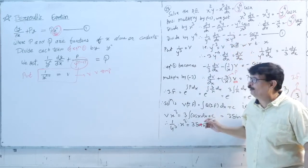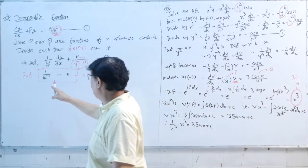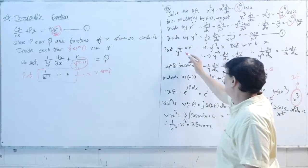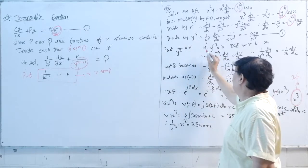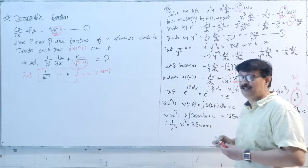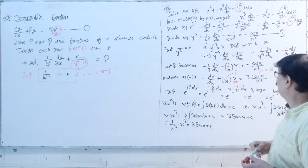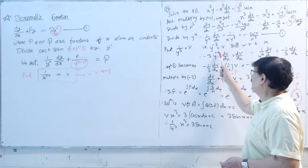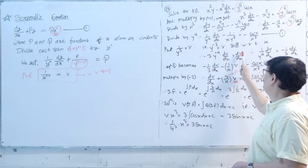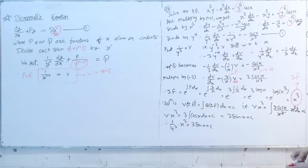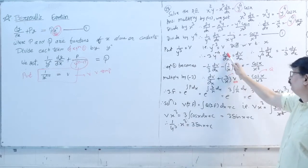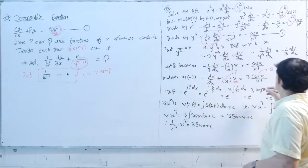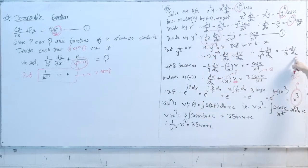As per the rule, put 1/y³ = v, i.e., 1/y^(n-1) = v, which means 1/y^(4-1) = 1/y³ = v, that is y^(−3) = v. Differentiating both sides with respect to x: −3·y^(−4)·(dy/dx) = dv/dx, so (1/y⁴)·(dy/dx) = −(1/3)·(dv/dx).